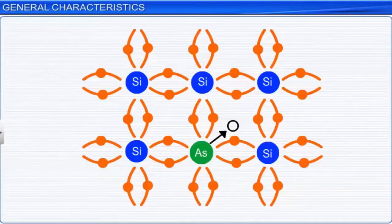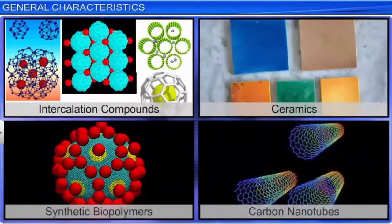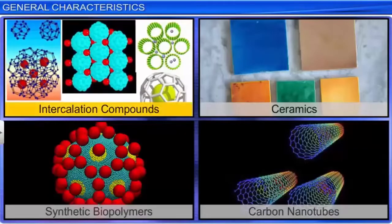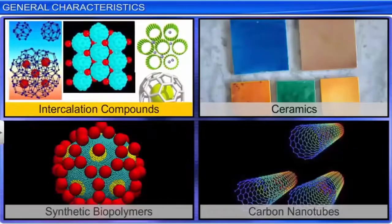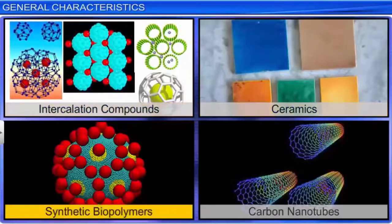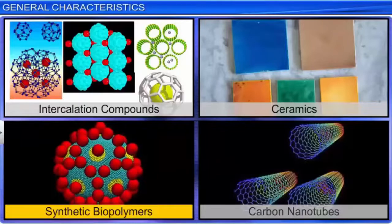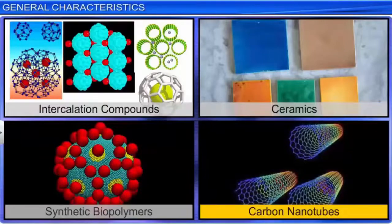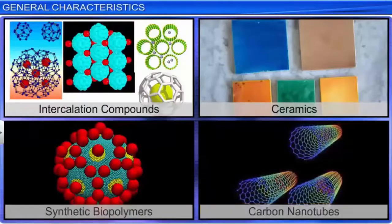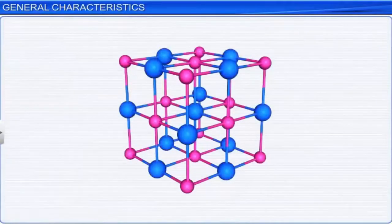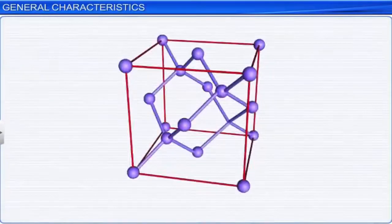Some solid materials prepared for applications in various fields include superconductors such as intercalated compounds of fullerenes, certain ceramics, synthetic biopolymers such as PHBV and PLA, and carbon nanotubes. Hence, the study of the structures of solids has immense significance in science and technology.